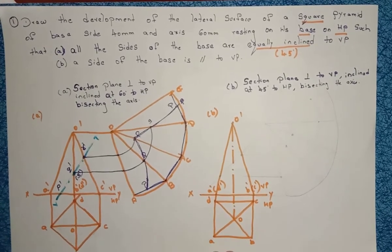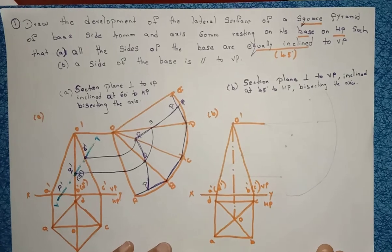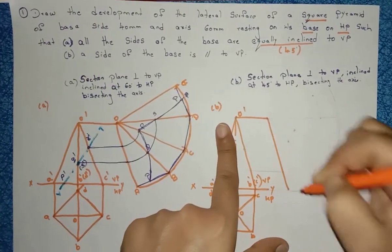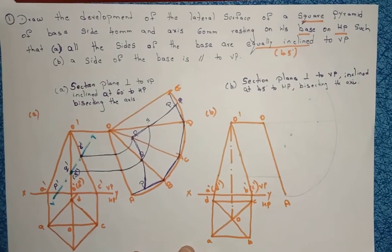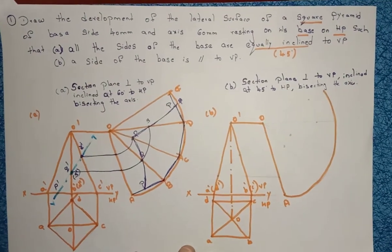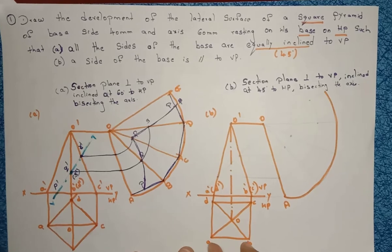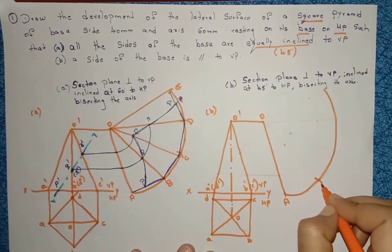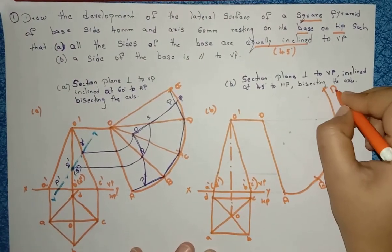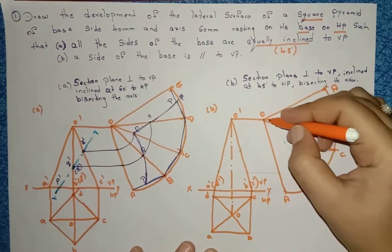Now draw the development of the square pyramid for part B. From O dash, draw a straight line of any length. Parallel to the slant edge, draw a line and name the points O and A. With O as center and OA as radius, draw an arc of any length. Divide the arc into 4 equal parts (since it's a square) using 40 mm compass steps — 1, 2, 3, 4. Name them B, C, D, and A again. Join O to A, O to D, O to C, and O to B.